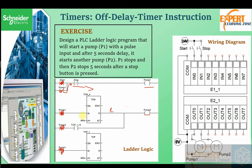Because the timer block is no longer active — pump P1 has gone off — the logic feeding the off-delay timer falls to zero. The off-delay timer then starts its timing. At that moment, pump P2 is still on because it was latched while P1 was running. Five seconds later the off-delay timer output goes to zero, its contact opens, and pump P2 turns off.